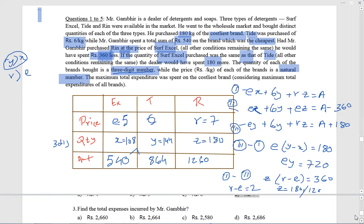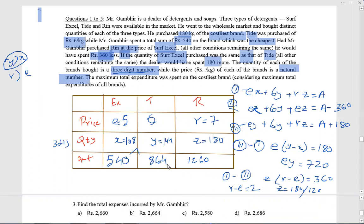Next problem: total expense. 540 plus 1260, that is 1800 plus 864. It will be 2664, option B.